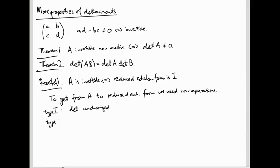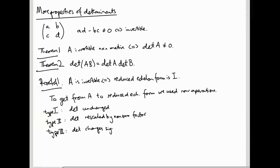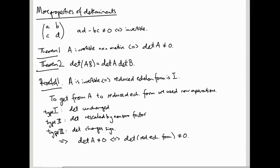If we do type 1 row operations, the determinant is unchanged. If we do type 2 row operations, the determinant gets rescaled by whatever we're using — it gets rescaled by a non-zero factor, so you can't rescale by zero. And type 3 row operations — in other words, swapping rows — the determinant changes sign. This tells us that det(A) is non-zero if and only if the determinant of the reduced echelon form of A is non-zero, because these two are related by row operations, each of which cannot change the determinant from a non-zero number to zero.